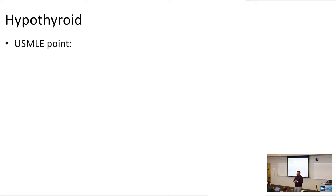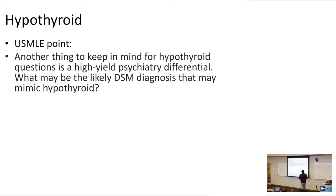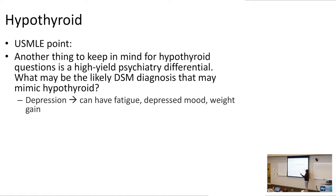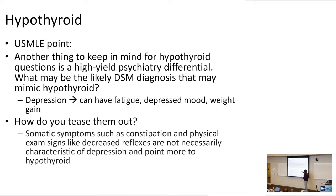A high-yield psychiatry differential for hypothyroidism is depression. Things slow down in hypothyroidism, and mood can slow down too. On the USMLE, you differentiate a depressed patient from a hypothyroid patient because depression can have fatigue, depressed mood, and weight gain just like hypothyroidism. However, somatic symptoms like constipation and physical exam signs like decreased reflexes are not characteristic of depression — that's how you tease them apart.